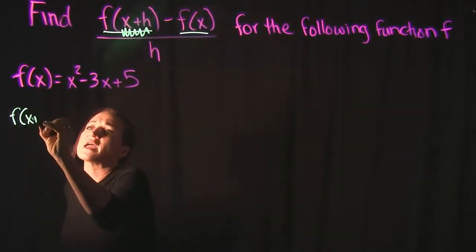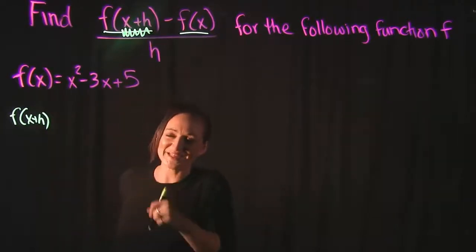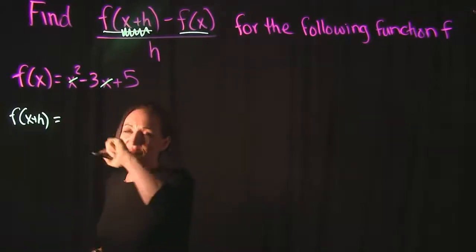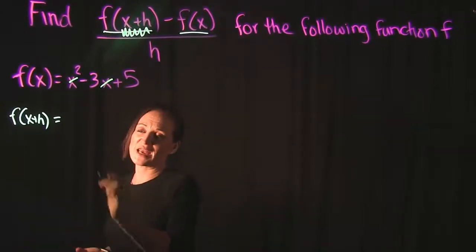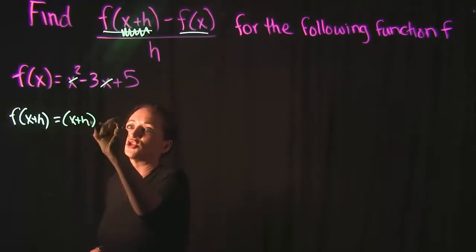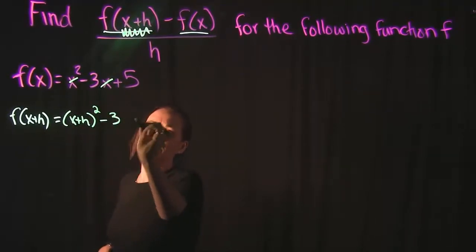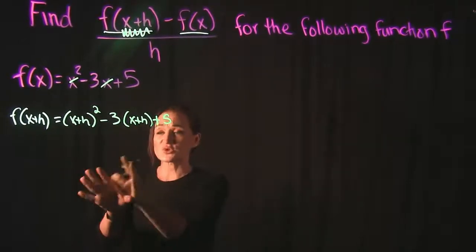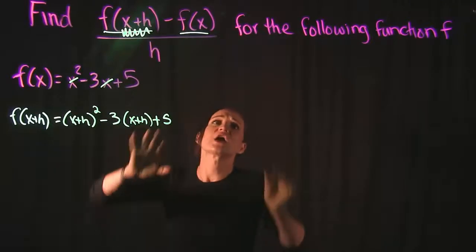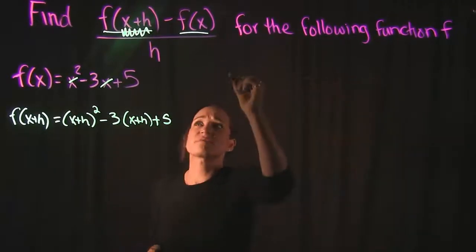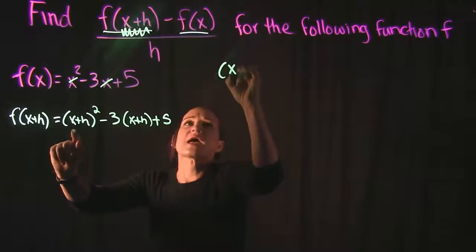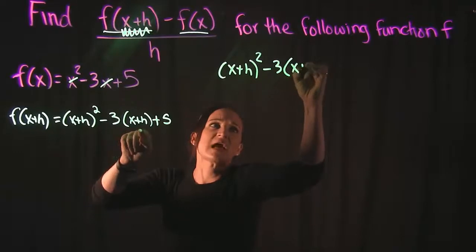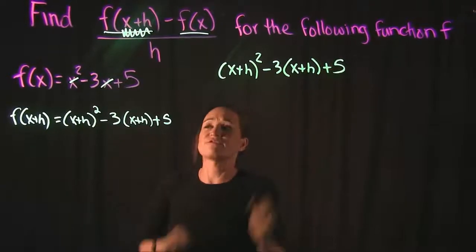So f(x+h) looks like this. I'm going to take every x, and instead of x, I'm plugging in x plus h. So that's going to look like (x+h) squared minus 3 times (x+h) plus 5. So that's what f(x+h) looks like. That's going to be the first part of my fraction.